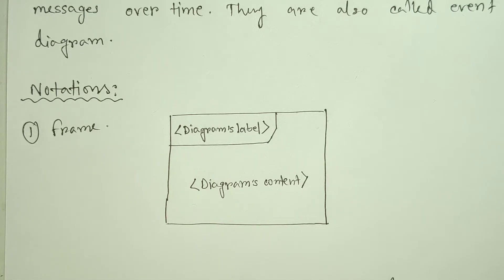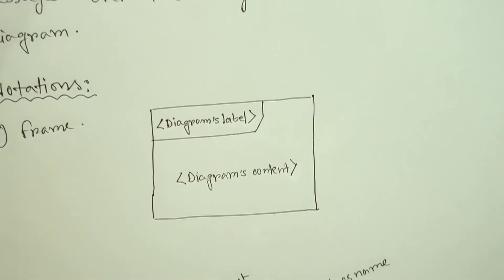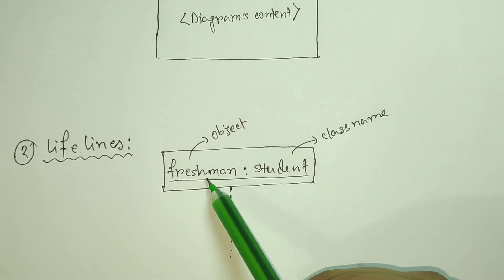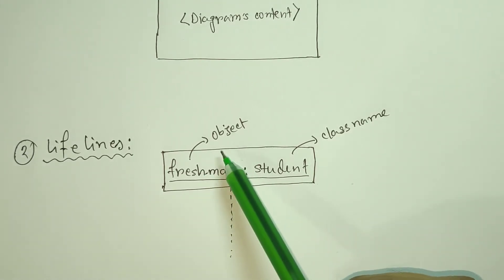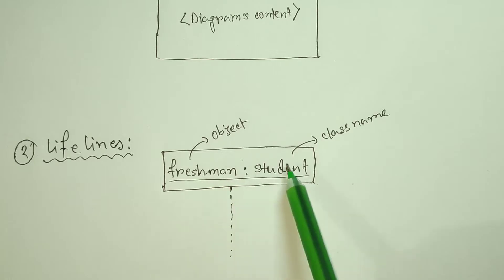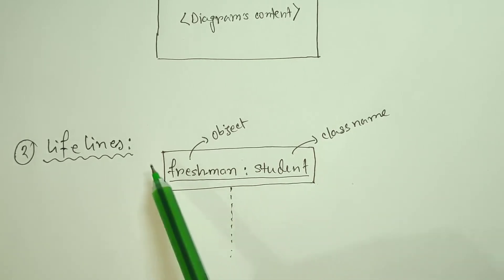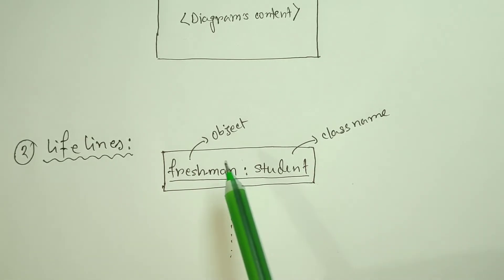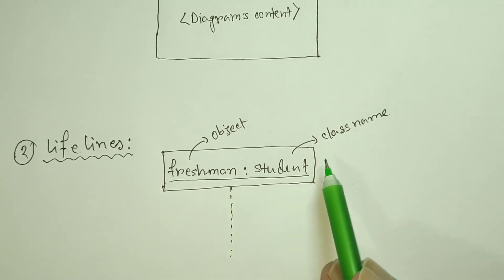Next, we will see the next part. The student is a class. This is the total of the student — this is the lifeline. The total of the student is class, and this is the bottom line. If you want to get the first object, this is the class name.